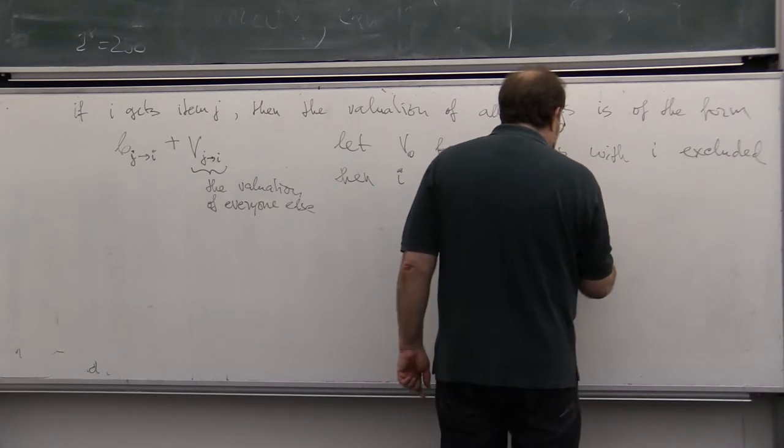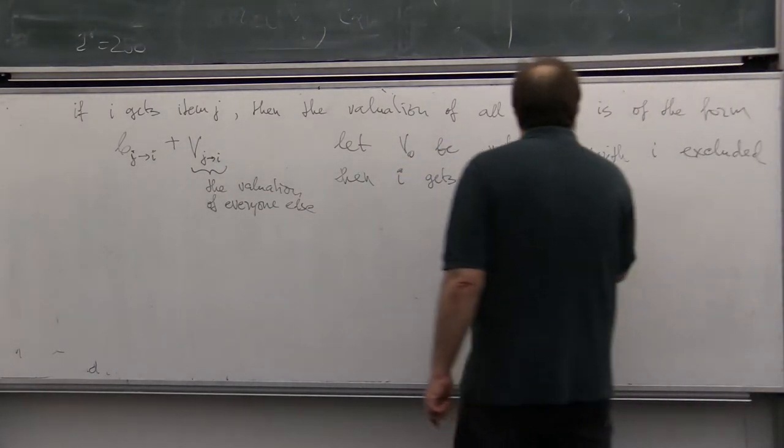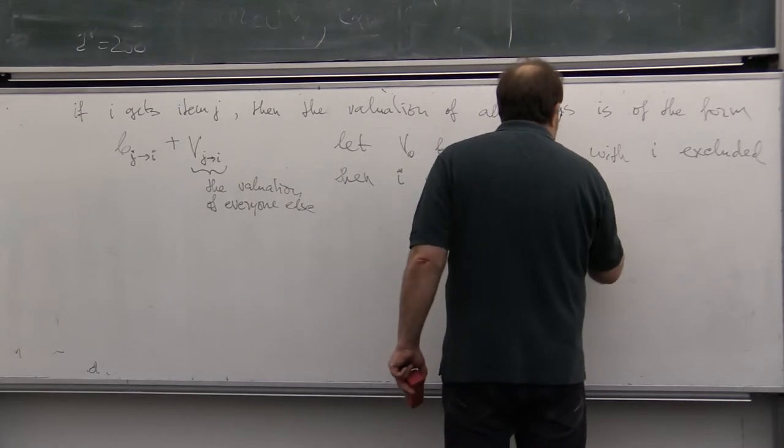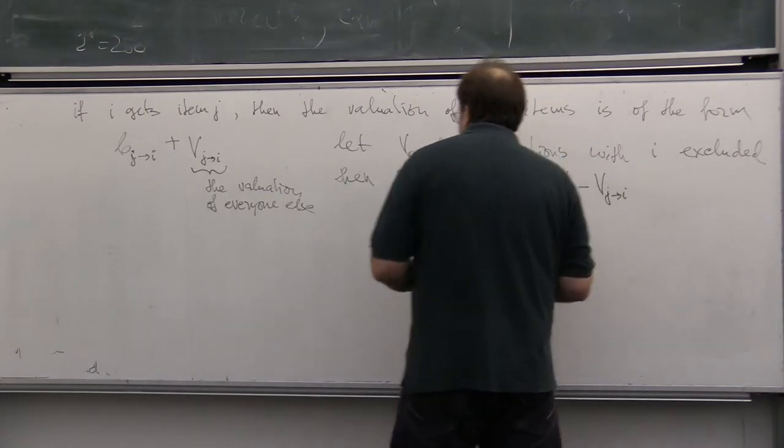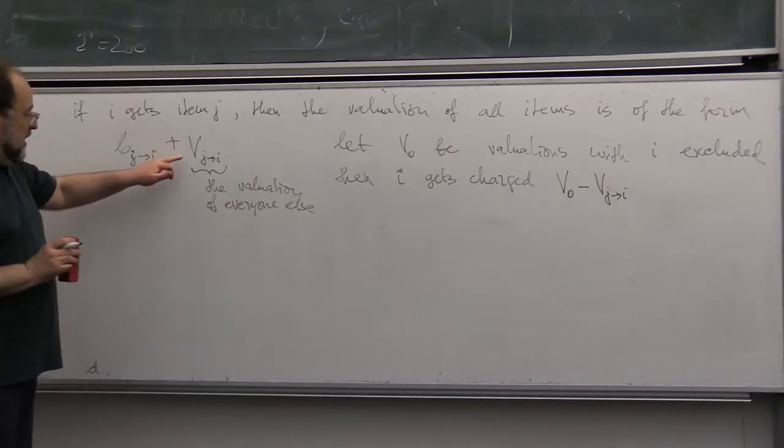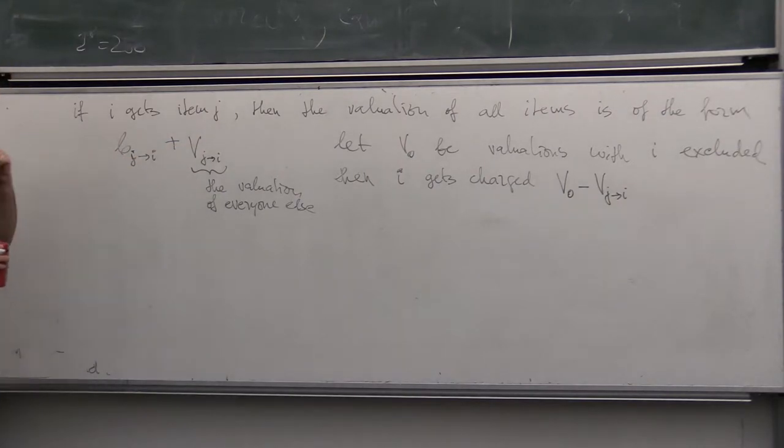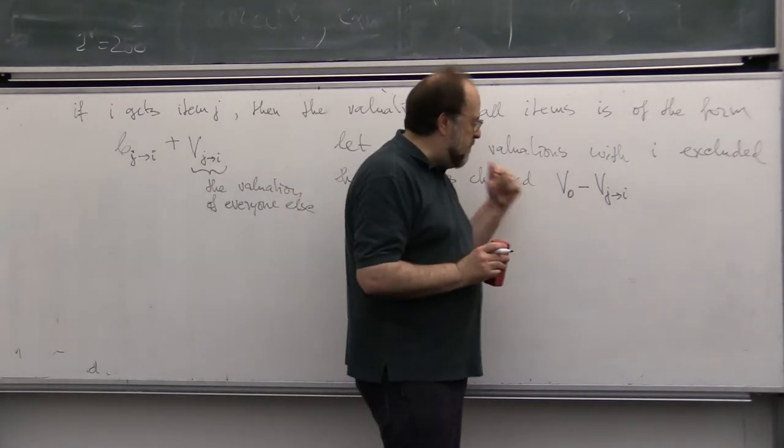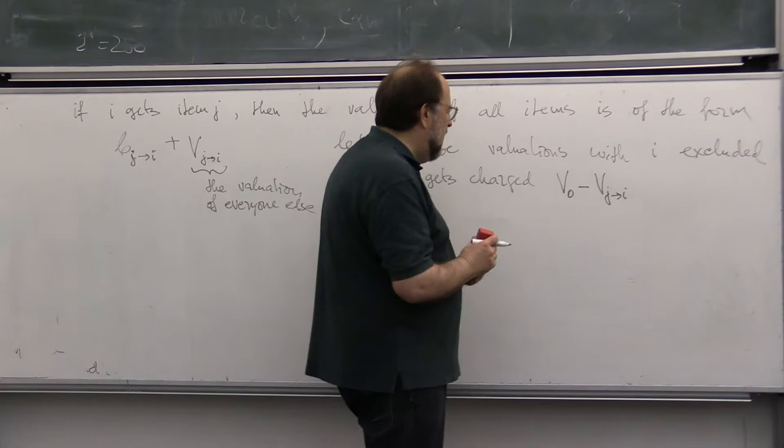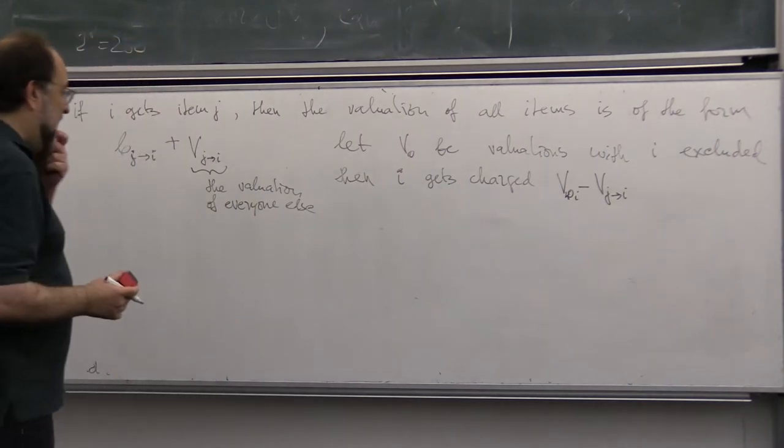Actually, it is the damage that he would cause, so it should be the other way around. He's charged V0 minus VJ goes to I, because that's the damage that he caused. This is the valuations for everyone else given the outcome of the option. And V0 is what would have happened in this option if you removed the, so let's call it no I. And this is what he gets charged.